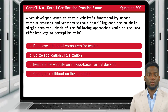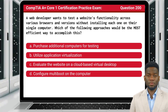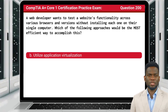Question 200. A web developer wants to test a website's functionality across various browsers and versions without installing each one on their single computer. Which of the following approaches would be the most efficient way to accomplish this? The answer is B: utilize application virtualization.